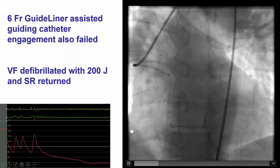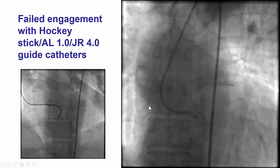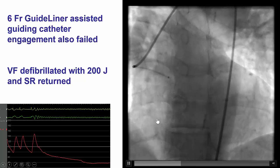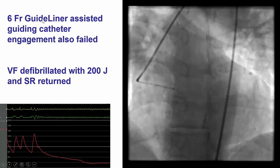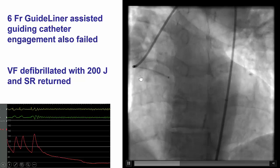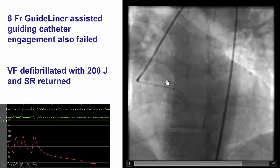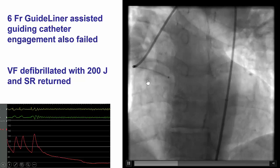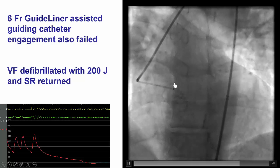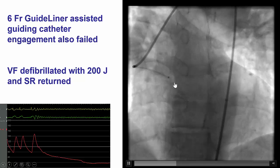That is why we switched to femoral access. Once again, we had significant difficulty engaging. We used a hockey stick, AL1, JR4 — none of them worked. We even used a guide catheter extension in an attempt to better wire the RCA, but we were unable to do so.